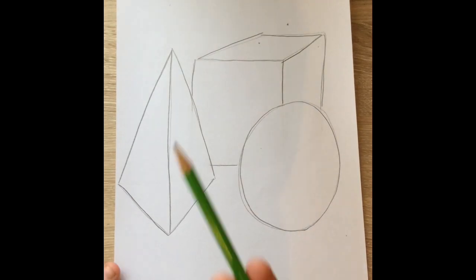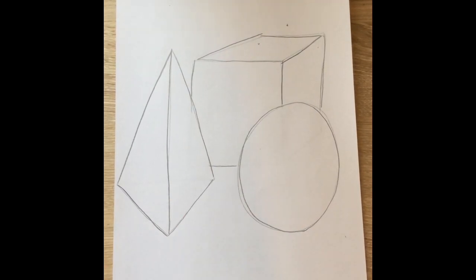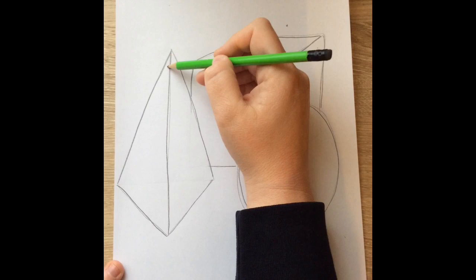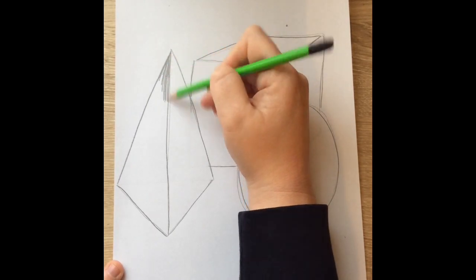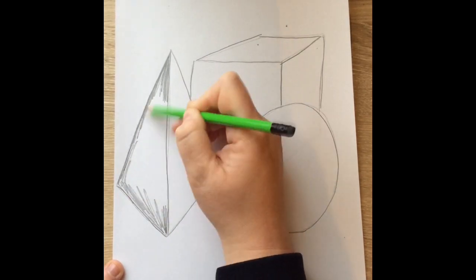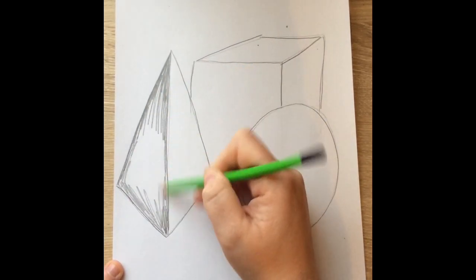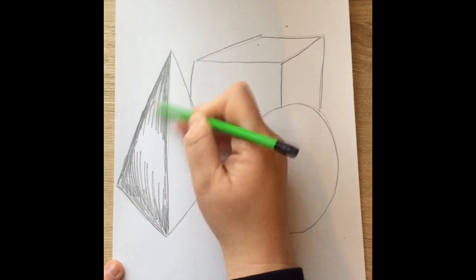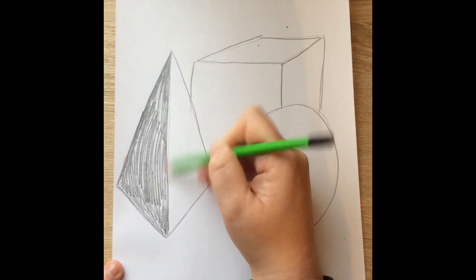All you're going to need to shade is your pencil and a black crayon if you have it. We are going to imagine there is a light source coming from the top right-hand side of our paper, so we're only going to be darkening one side of each of our shapes.